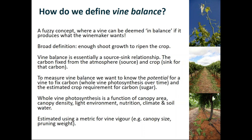Essentially vine balance is what we call the source-sink relationship where the carbon that is being fixed from the atmosphere through photosynthesis in the leaves is the source - it's the source of the energy. The crop itself and its requirement for that carbon as sugar is the sink for that carbon. So it's a relationship between the source in the canopy and the sink in the fruit.